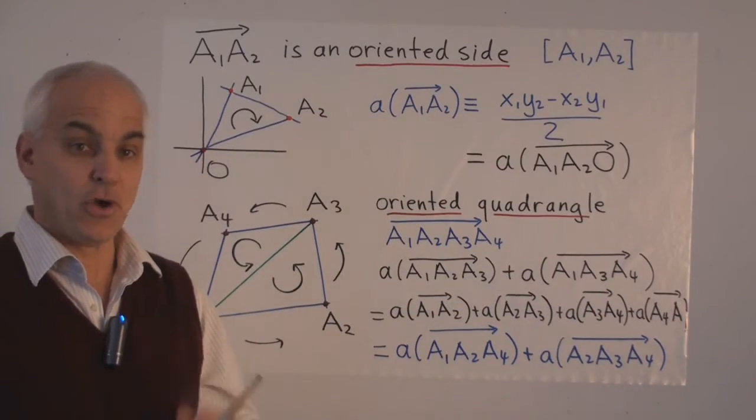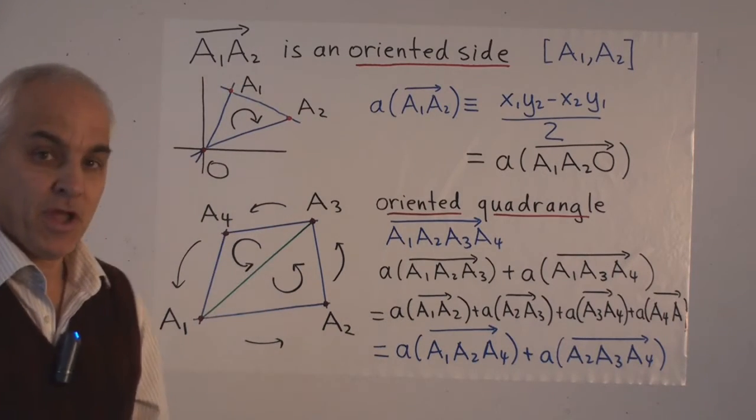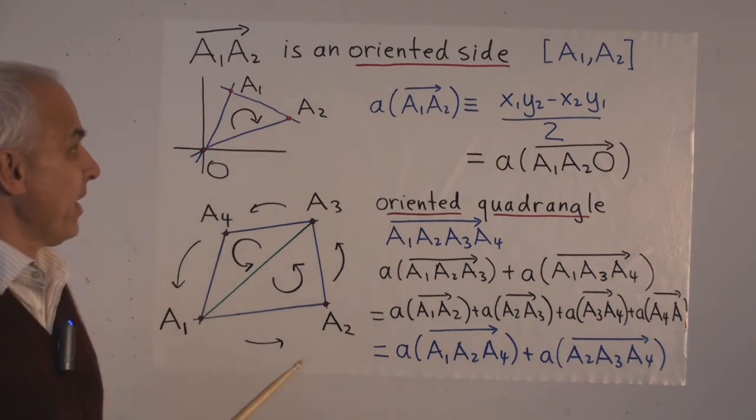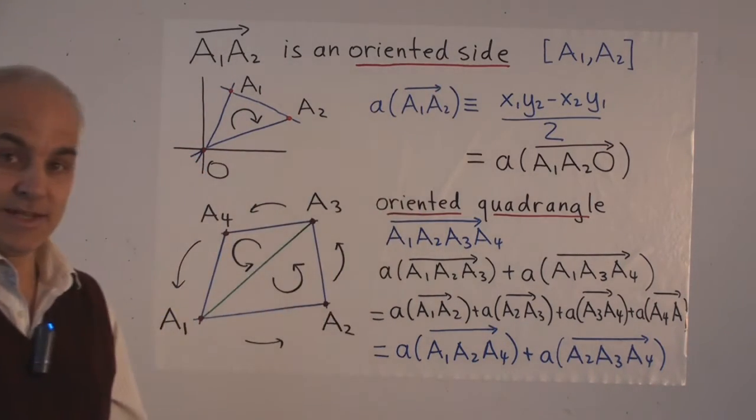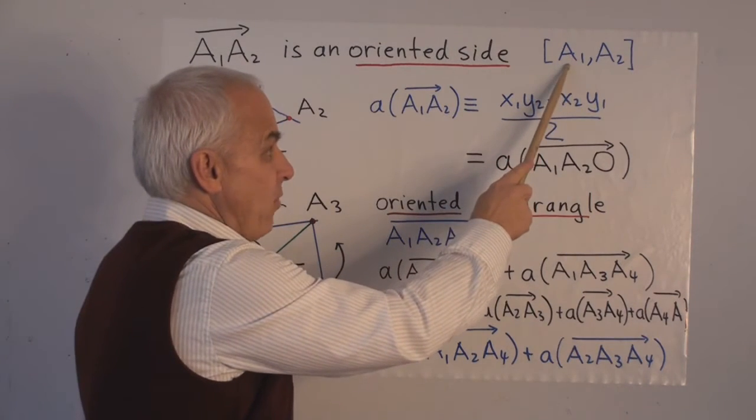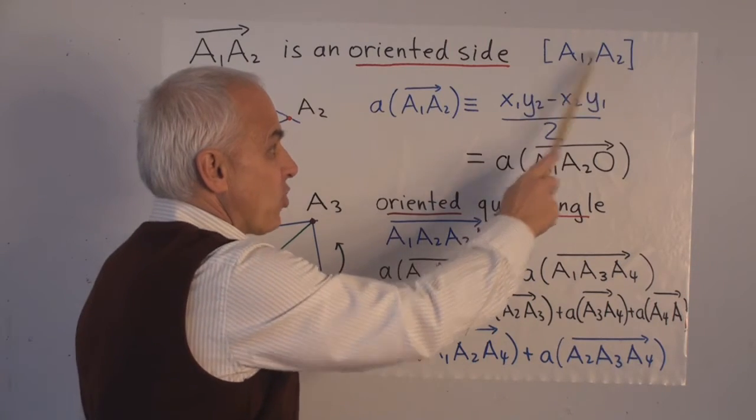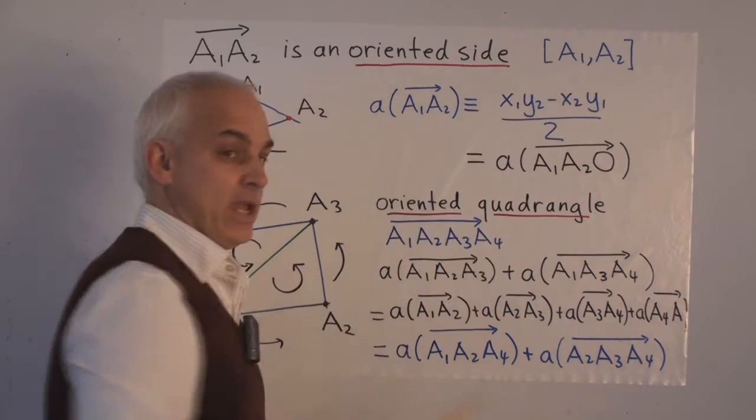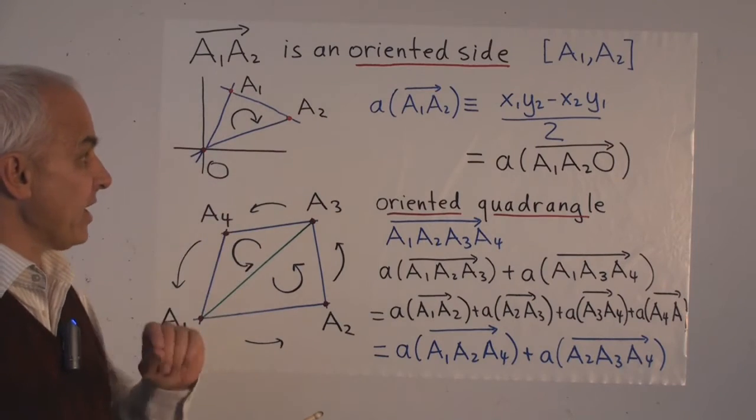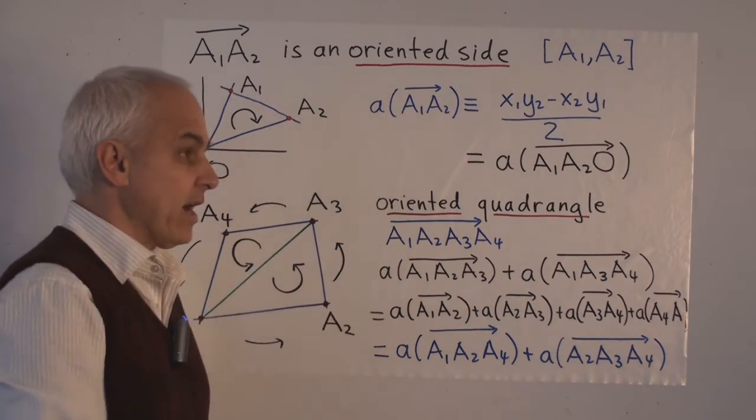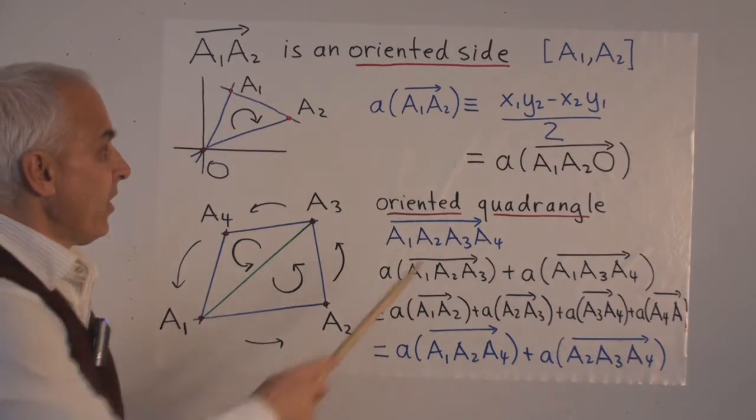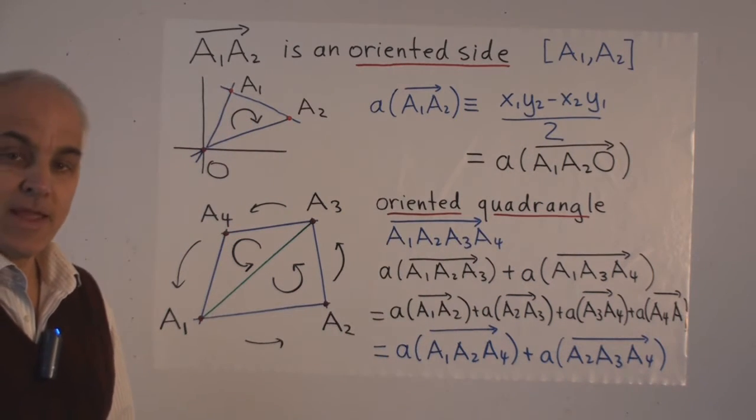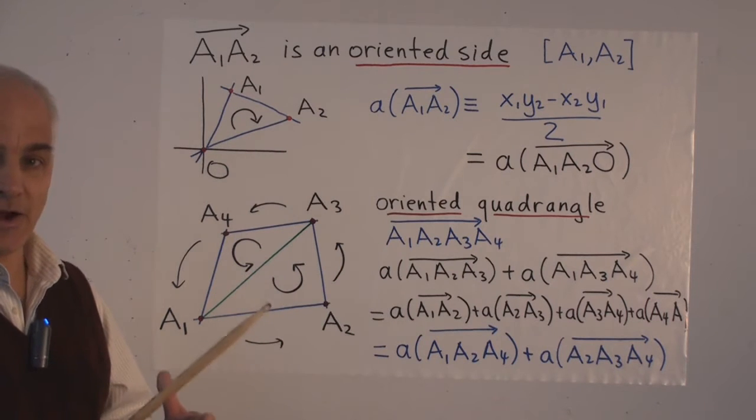So we've introduced this new notation, A1, A2 with a full arrow over it. Not a half arrow which we'll use for the vector notation, but rather a full arrow. This is an oriented side. And what that means is it's a list of two points. A1 followed by A2. The square brackets denote a list as opposed to a set. So the two points can agree or be distinct. It doesn't matter. That's what an oriented side is. And what we call the signed area of the oriented side is explicitly given by this. So in terms of the coordinates of A1, A2, it's X1, Y2 minus X2, Y1 all over two.